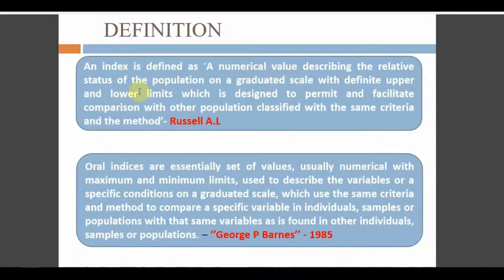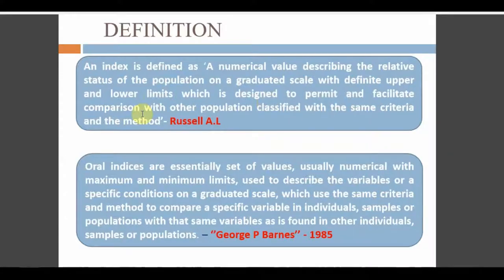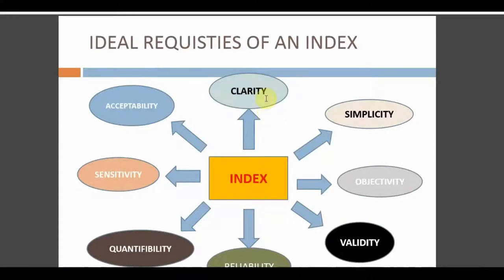The index describes the status of a population — whether it is oral health status, caries status, plaque status, or gingival status — using a graduated scale with proper markings and definite upper and lower limits. For OHIS, the upper limit is 6 and the lower limit is 0. The purpose is to facilitate comparison with other populations classified by the same index.